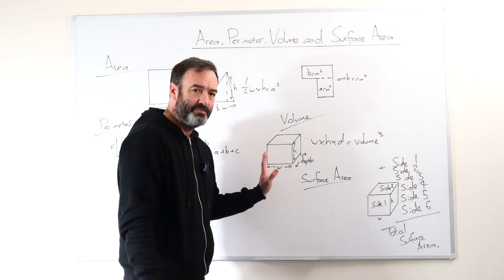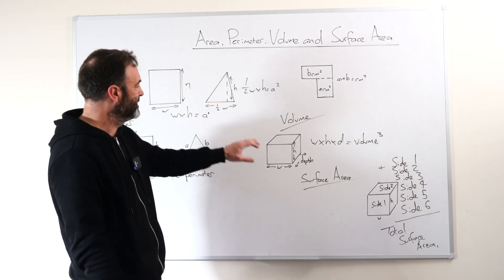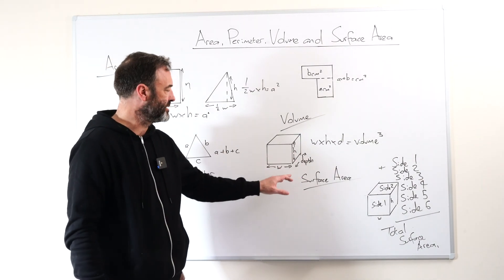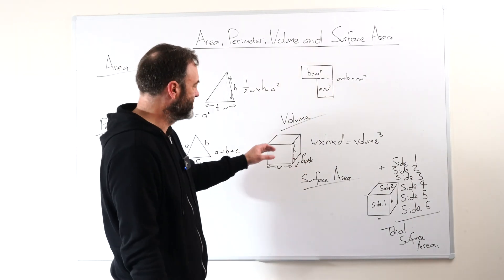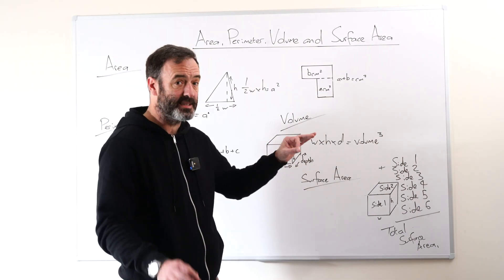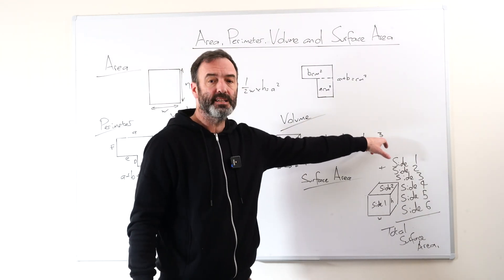Now we come to volume, which is actually really easy. It's just the area times the depth. So it's height times width times depth. Now because you're multiplying three things, it has three dimensions. It's a three-dimensional shape. It's cubed, to the power of three.